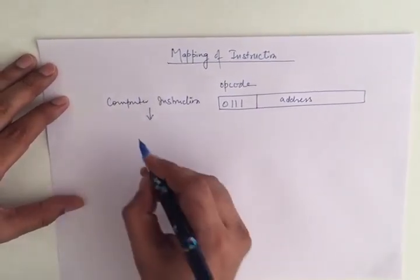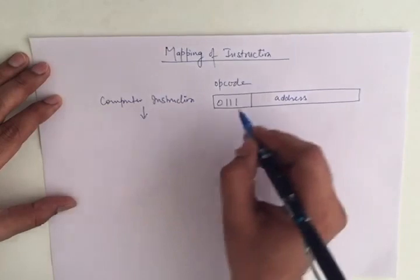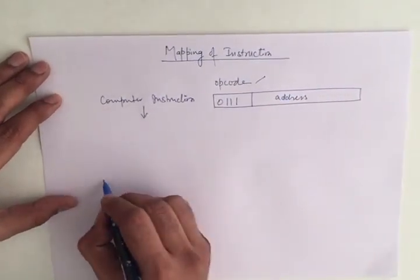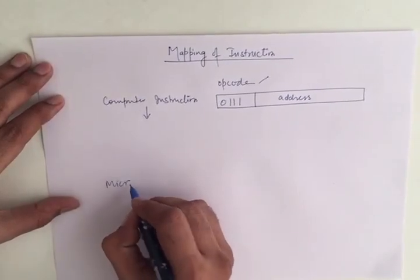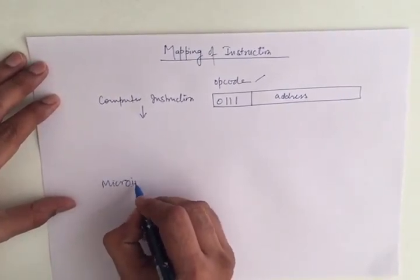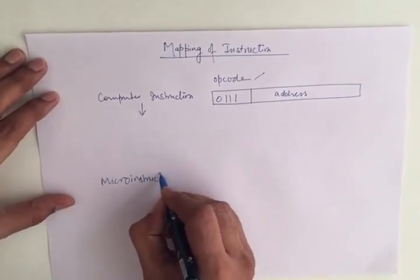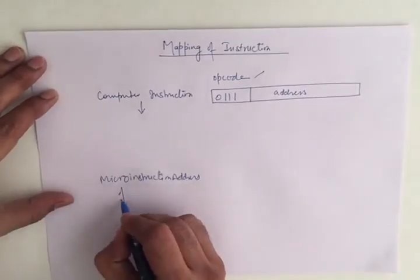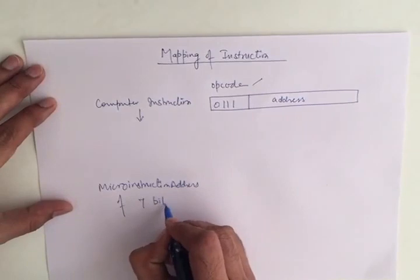This is the process to map this opcode to generate a 7-bit microinstruction address.